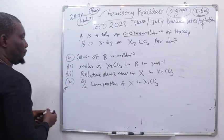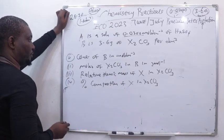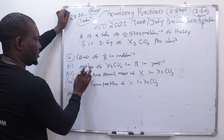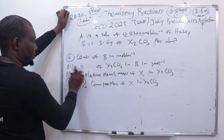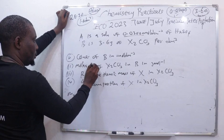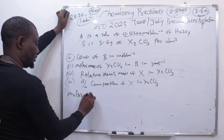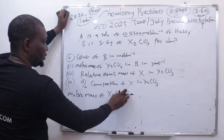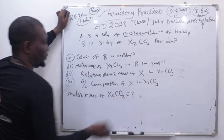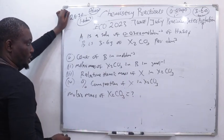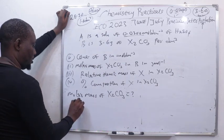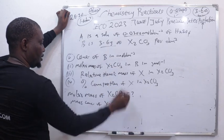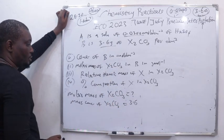To find the molar concentration - actually, the molar mass. We have the molar mass of X₂CO₃ in grams per mole, that's what we're looking for. We know that the mass concentration of X₂CO₃ is 3.6, and the molar concentration of X₂CO₃ is 0.0340.